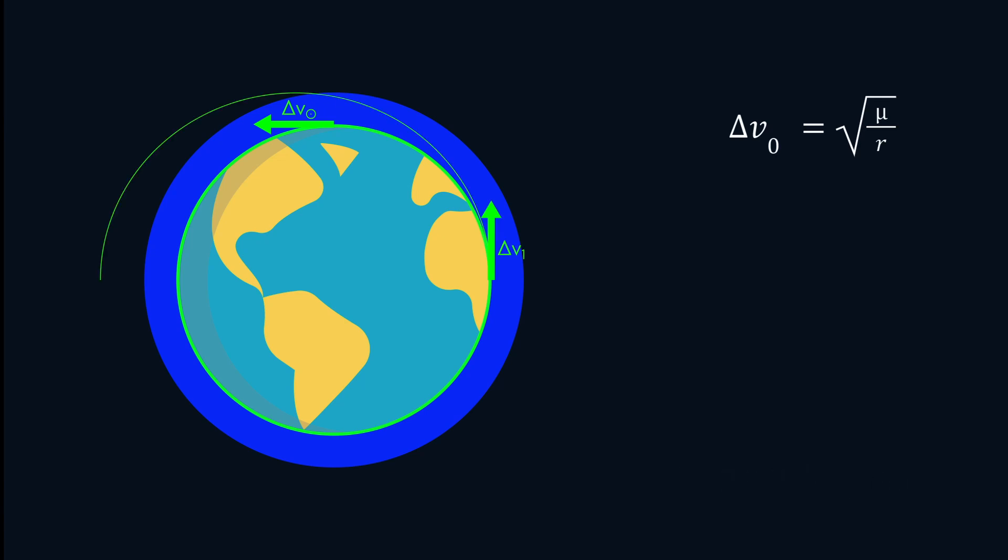For B, the calculation is given by the following formula. Where mu is the gravitational parameter of the Earth, R1 is the Earth radius and R2 is the Earth radius plus the low Earth orbit altitude. We can make a numerical application. It gives a little bit more than 61 meters per second.